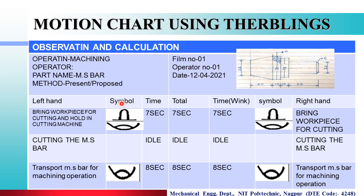Then Left Hand column, then Therblig Symbols, then Time Taken by the Left Hand, Time Taken by the Right Hand, and then Total Time of the Operation. First, Left Hand में: Bring the Workpiece for Cutting and Hold in a Cutting Machine. So सबसे पहले Workpiece जो है वो लाना पड़ेंगा Cutting Machine पे और उसको Hold करके रखना पड़ेंगा. First one is the Holding and then one is the Loading symbol.